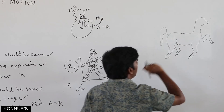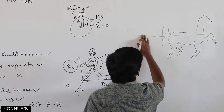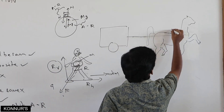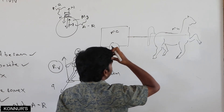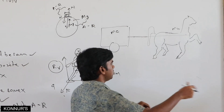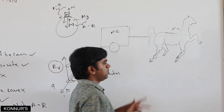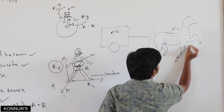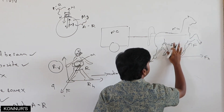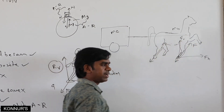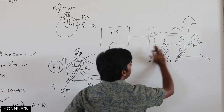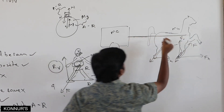Consider a horse connected to a cart, where horse mass is M_H and cart mass is M_C. The horse applies force on the ground, and the ground reaction gives a horizontal component F_H and vertical component F_V. The horse is connected to the cart by a string, so tension T generates.